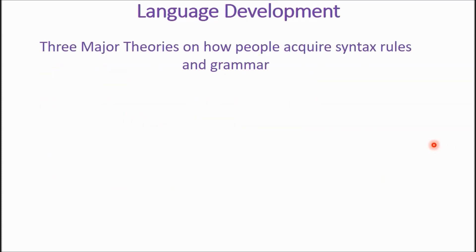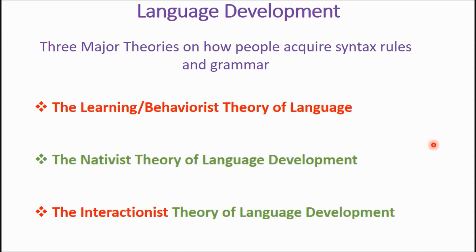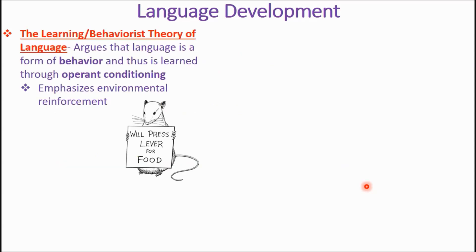So, language development. There are three major theories on how people acquire syntax, rules, and grammar. There's the learning behaviorist theory of language, the nativist theory of language, and the interactionist theory of language development. The behaviorist theory argues that language is a form of behavior and is learned through operant conditioning, associated with positive and negative reinforcement, focusing on environmental reinforcement rather than innate ability.